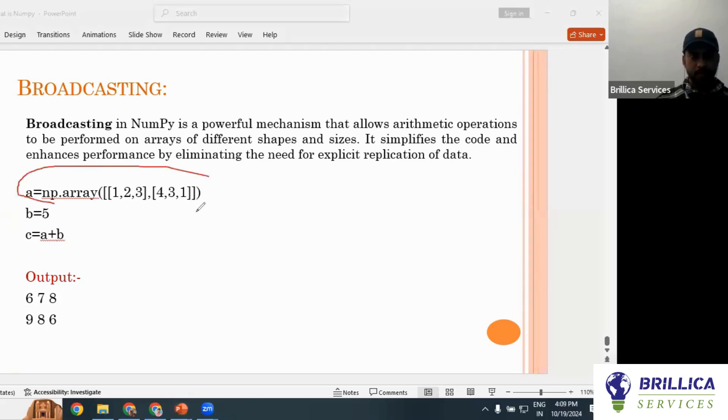This is a single value, a scalar value. Now we have two-dimensional operations. So if you have a two-dimensional array, let's say this one - 4, 3, 1 - and this is 5 to operate.